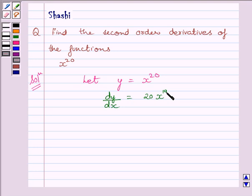Now, again, differentiating both sides with respect to x, we get d square y upon dx square is equal to 20 multiplied by 19 multiplied by x raised to the power 18.